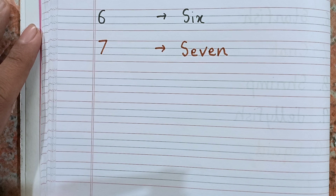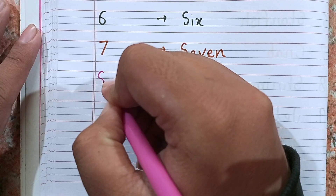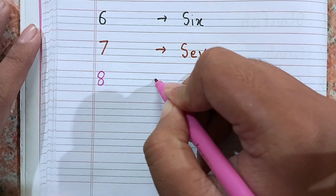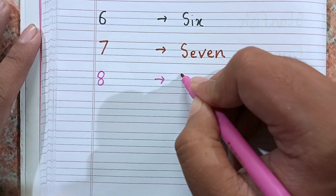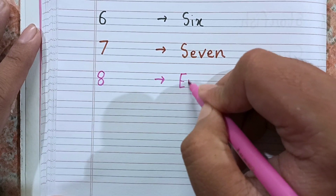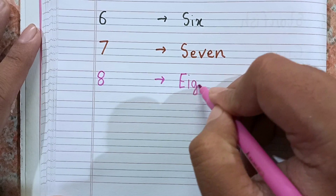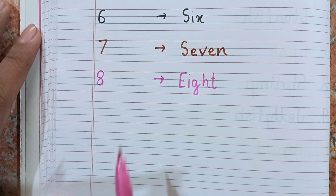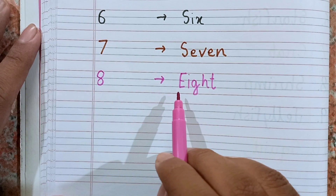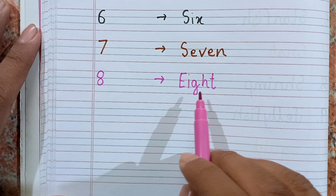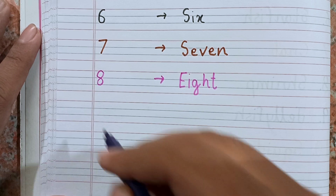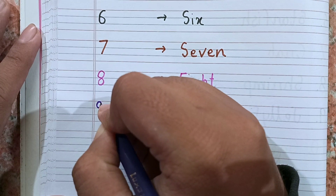Now I am going to write the next number, 8. This is 8. Which number is this? This is 8, and the spelling of 8 is E-I-G-H-T. After 8, the next number will be 9.